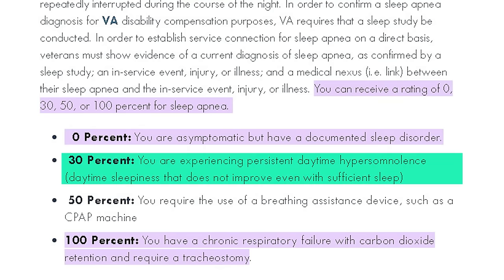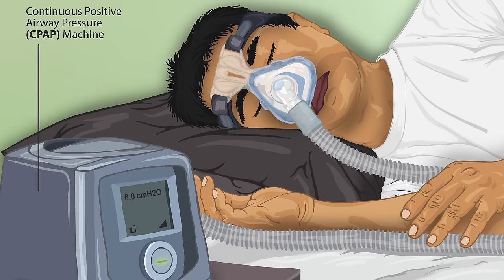Let's hop into a 30% VA disability rating for sleep apnea. According to the law, it says you are experiencing persistent daytime hypersomulence — daytime sleepiness that does not improve even with sufficient sleep. Some people can have excessive daytime sleepiness even though they are getting enough sleep. Think of people who have narcolepsy — it's not really a sleep-disordered breathing condition, but maybe you have some underlying condition that causes you to be extra sleepy during the day. There are people who can get eight hours of sleep at night but are still sleepy during the day.